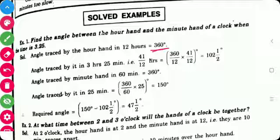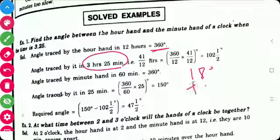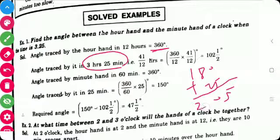Angle traced by hour hand in 12 hours is 360° as we have seen in the facts and formula. So, angle traced by it in 3 hours and 25 minutes means we will convert this 3 hours and 25 minutes. First we will convert it into minutes. So, 3 hours means 60 into 3 is 180 plus 25.